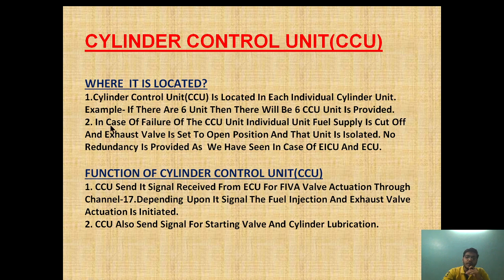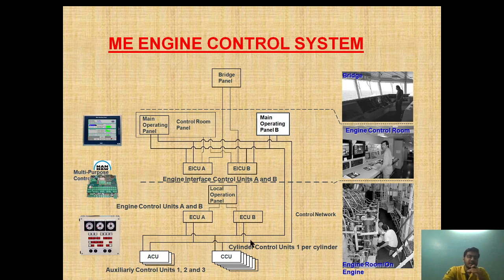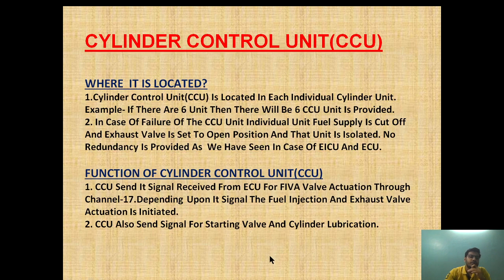The next question is whether there is a backup for CCU like ECU A and ECU B, where if one fails the other comes online. The answer is no. In case of a CCU failure, the individual unit fuel supply is cut off, the exhaust valve is set to open position, and that unit is isolated. No redundancy is provided, unlike EICU and ECU.